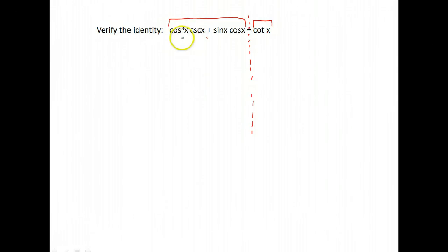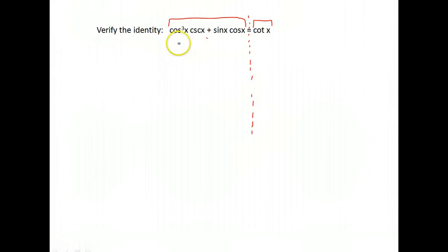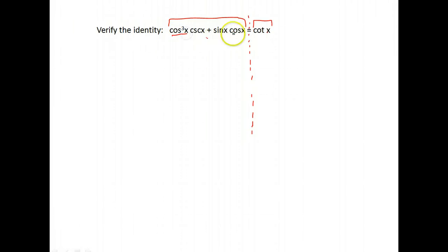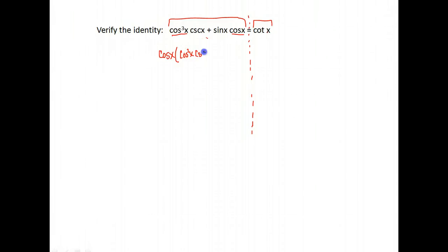You can't do whatever you want. You have to use identities that are true identities from your basic trig identities, and you have to use sound algebra practices. Looking at this, the first thing I notice is that I have cosine here and here. So I'm going to use factoring and factor out a cosine. That would leave me with — since I took one out — a cosine squared instead of cosine to the third, and a cosecant x.